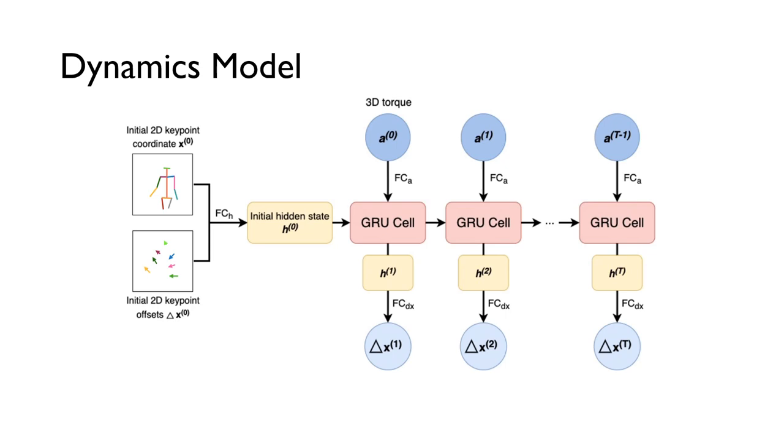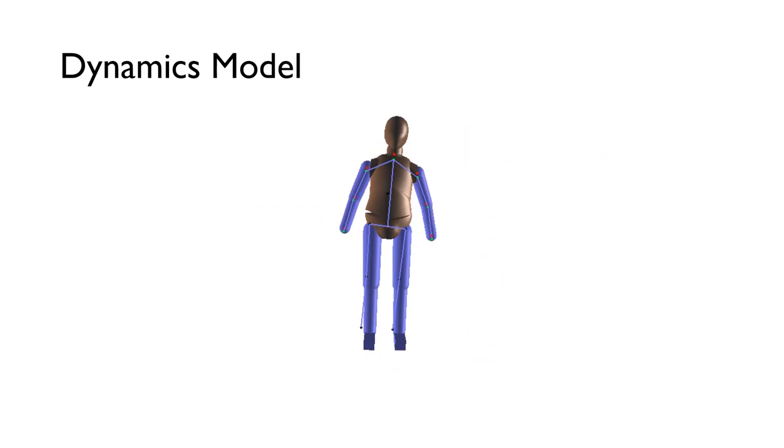The dynamic model is trained to simulate the sequence of states. At each time step, our dynamic model takes a 3D torque as input and predicts the next step to the keypoints offsets.